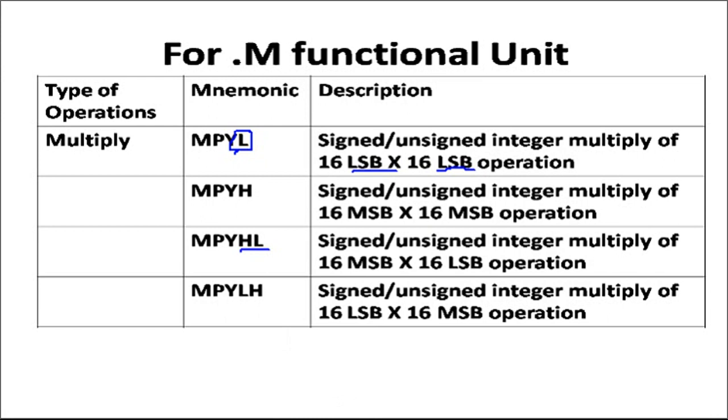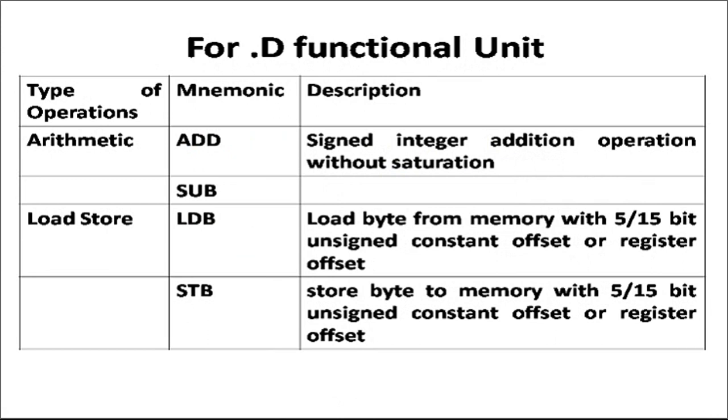Next is .D unit. Once again another ALU where some of the arithmetic instructions and load and store instructions. This is important, this is the specific purpose of .D unit where it is taking care of load and store instructions. .D unit also takes care of addition and subtraction, but load and store are specific functions. It loads a byte from memory with 5/15 bit unsigned constant offset or register offset. We are going to see these instructions in detail where we will understand the addressing modes. Likewise, it stores a byte to the memory. Loading or storing is always taken care considering CPU as a reference. From the CPU whether I'm storing, or to the CPU I am loading, so depending on this you can understand the basics.